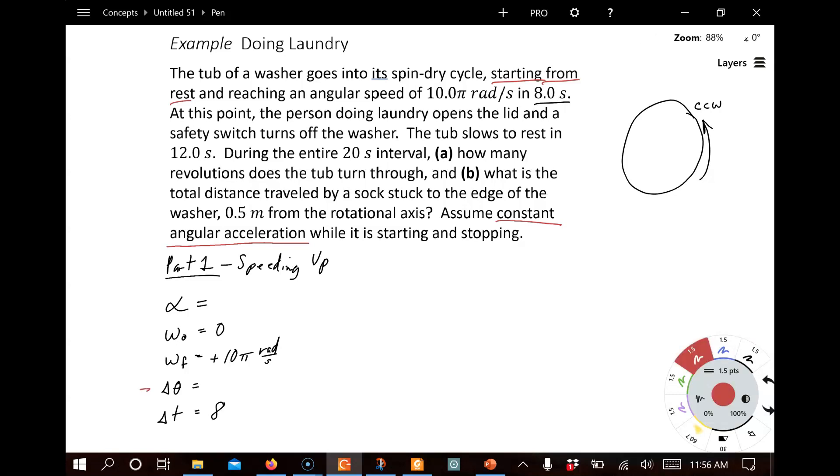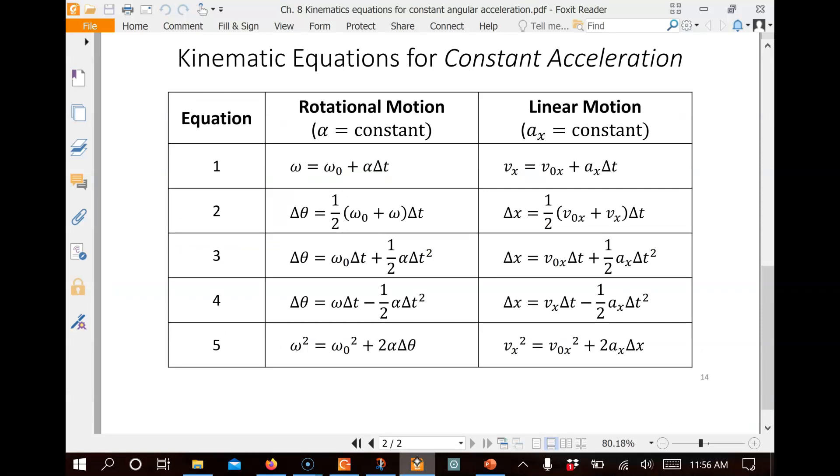We're trying to figure out how many revolutions does the tub turn through. Revolutions is related to the angle it spins through. So we want to know what that angle is. Let's see if we can find an equation. Now, we're going to look for one that does not have acceleration, the angular acceleration, because we don't know what that is. The one without angular acceleration, it looks like that is the second equation here.